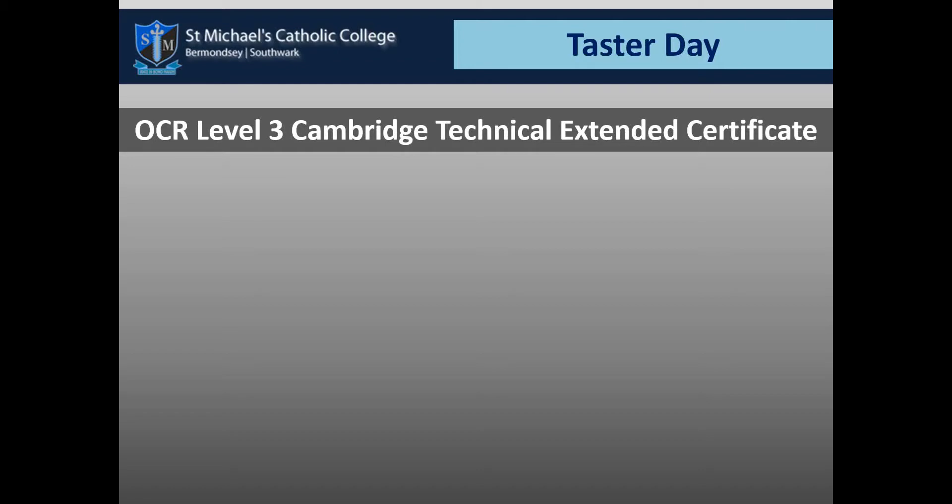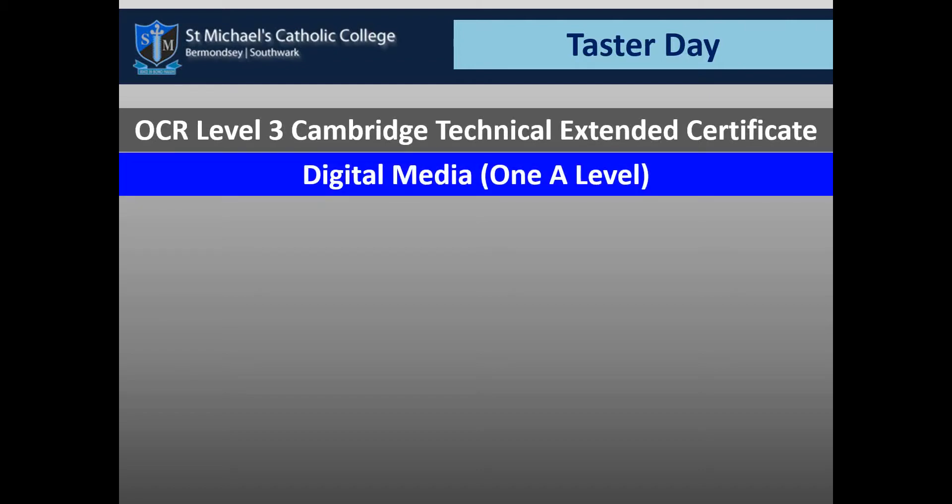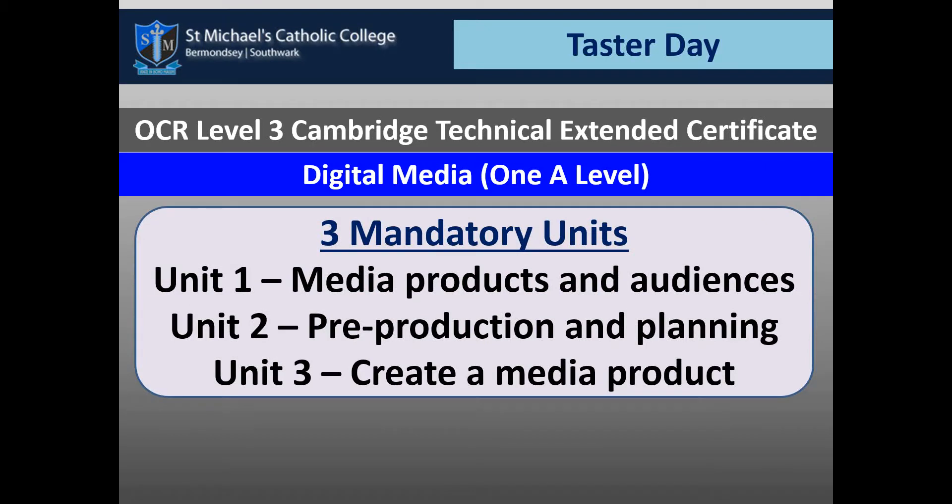Within this certificate, it's 1 A-level, and there are three mandatory units. Units 1 and 2, done across the two years, are exam-based — you would have to carry out an examination on media products and audiences, and pre-production and planning. These are very important concepts for understanding how audiovisual video works and the film language that lies behind that. Unit 3 is a coursework unit called 'Create a Media Product', which I'll talk about a bit later.